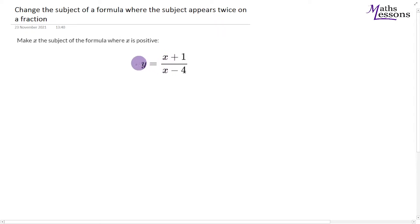We're going to make it so that x is on this side and there's no x's on this side, with only y's and numbers on this side and x all on its own. That's what we're trying to do.